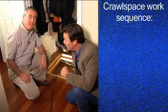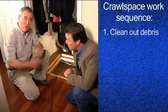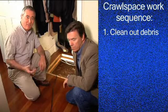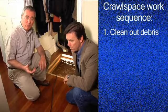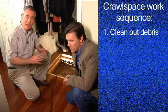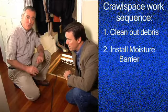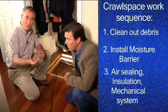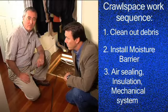Our typical work sequence in a crawl space starts with cleaning out all the old debris — often things left there for years — then pulling out the duct system if it's going to be replaced, and just cleaning everything up. Next we put down the moisture barrier so we have a nice place to work, and then we do whatever insulation, air sealing, and new mechanical systems are needed in the crawl space.